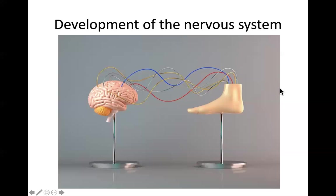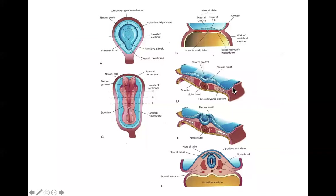The development of the nervous system starts in the third week of gestation with the formation of the notochord. Formation of the notochord induces neurulation. The appearance of the neural plate, which is induced by the notochord, is when development of the nervous system starts at about the third week of gestation. I repeated that twice because it's probably going to show up on a quiz at some point.